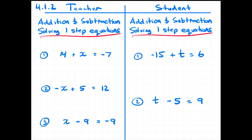Moving on to the content in this lesson, we are going to look at solving one-step equations. We're going to look at one-step equations with addition and subtraction, and our ultimate goal is to determine the value of x. On the left-hand side we've got x, and on the right-hand side there's a negative seven. So we're trying to figure out what is the value of x so that the left side will equal negative seven. If I have 14 minus 21, that is negative seven, which equals negative seven, and we have both sides equal.